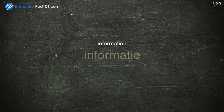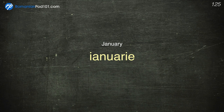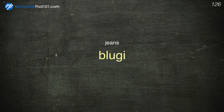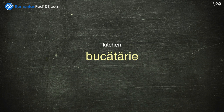Information — Informație. Internet — Internet. January — Ianuarie. Jeans — Blugi. July — Iulie. June — Iunie. Kitchen — Bucătărie.